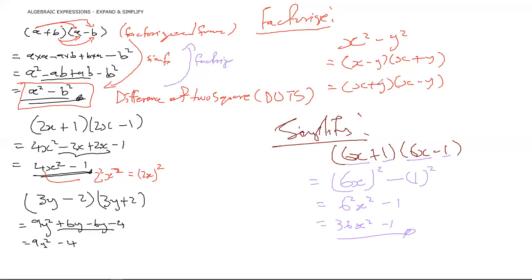This is the beauty of understanding that simplifying is just the reverse of factorization. Now that we've noticed this pattern, we no longer have to rack our brains whenever we come across a Difference of Two Squares. Always watch out for it and make sure you can factorize it. Now let's look at what happens when you multiply a binomial and a trinomial.